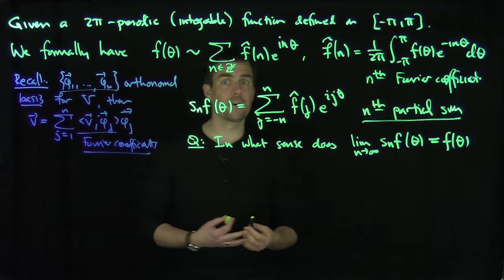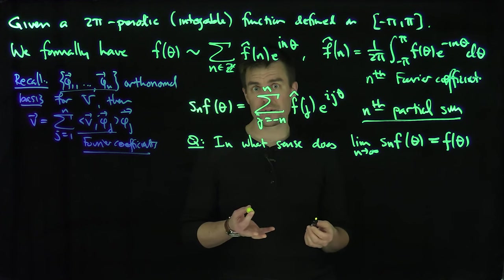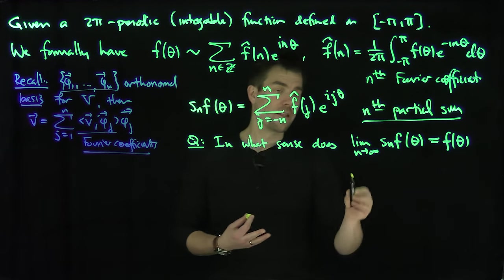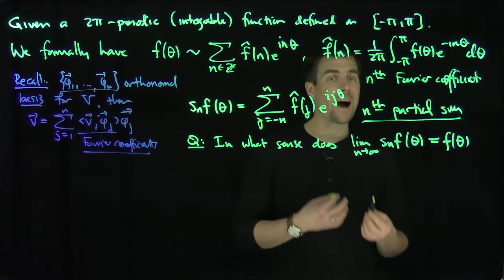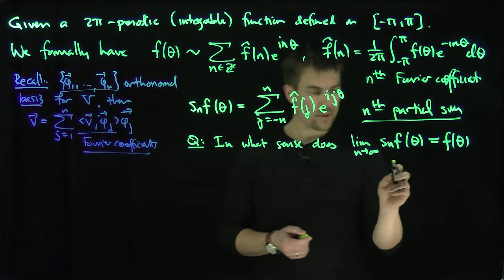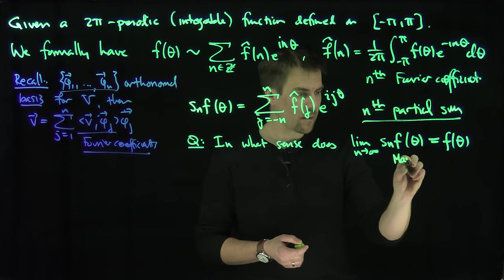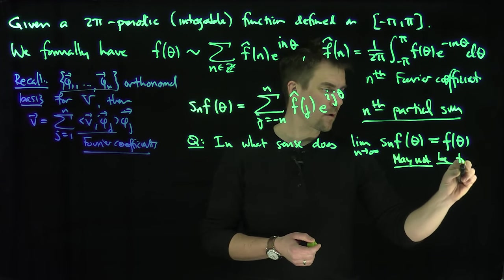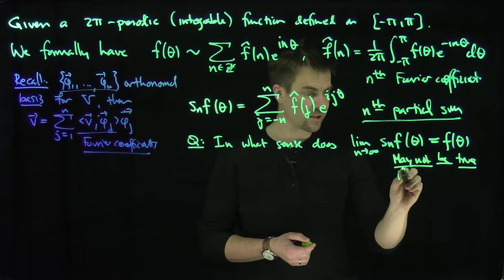And so the answer depends on how smooth the function is. If, for example, the function is twice continuously differentiable, has two continuous derivatives, or even just one continuous derivative, then this expression here is true point-wise. However, if f is just continuous, this may not be true.